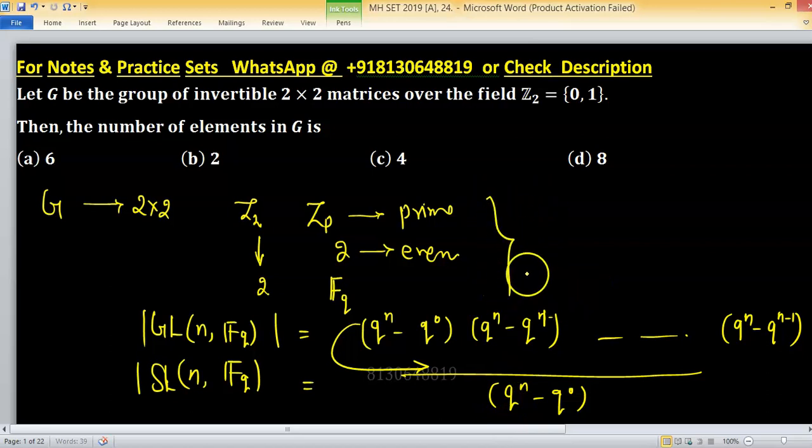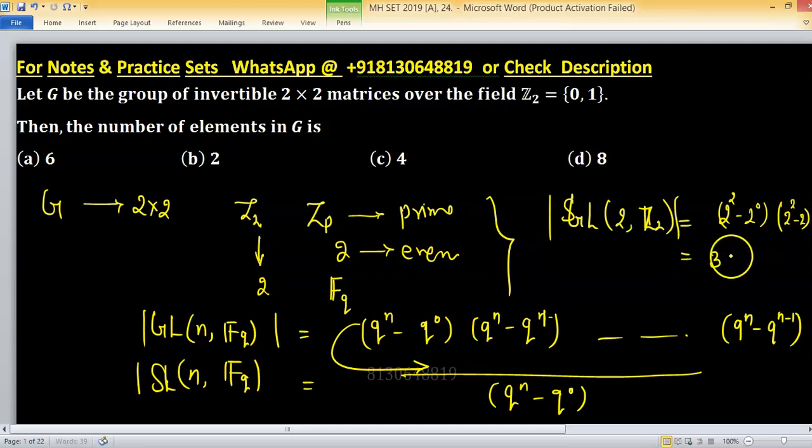But we have to find the order of the group GL, size is 2 and elements are coming from Z2. So the order of this one will be 2 raise to the power 2 minus 2 raise to the power 0, times 2 raise to the power 2 minus 2. So we have 3 into 2 equals to 6.